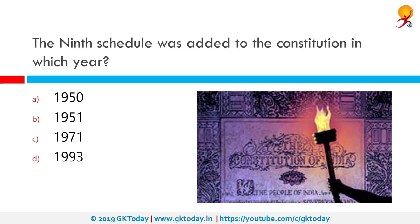The 9th schedule was added to the constitution in which year? The correct answer is 1951. The 9th schedule to the Indian constitution was introduced through Article 31B by the First Constitution Amendment Act 1951. The object of the 9th schedule was to save land reform laws enacted by various states from being challenged in the courts, to facilitate agrarian reforms of the government of India.